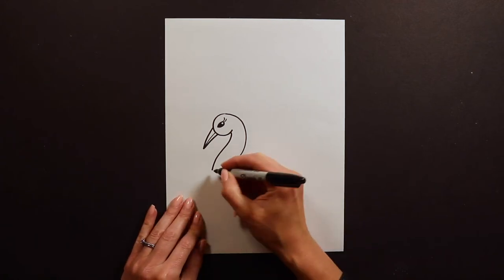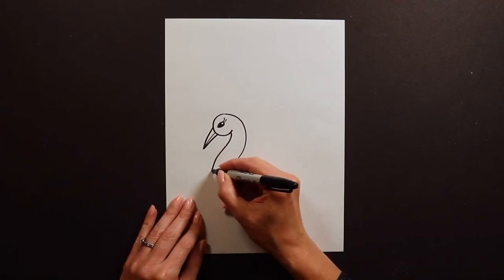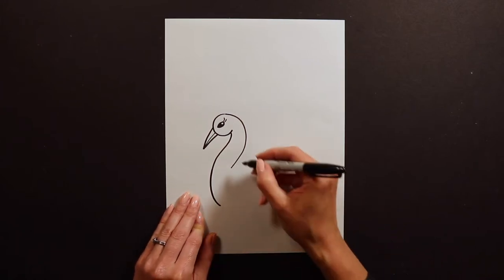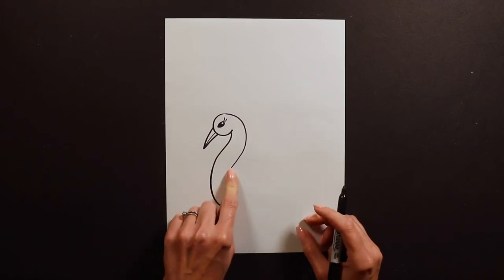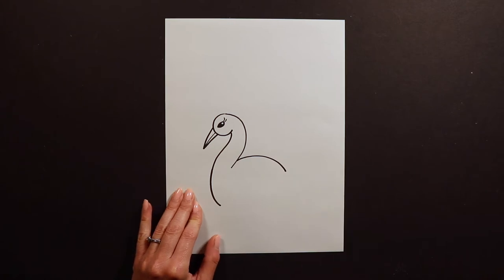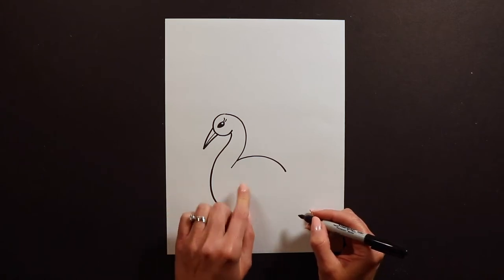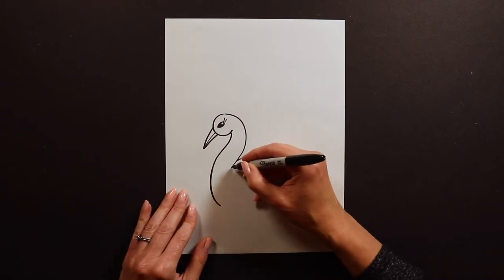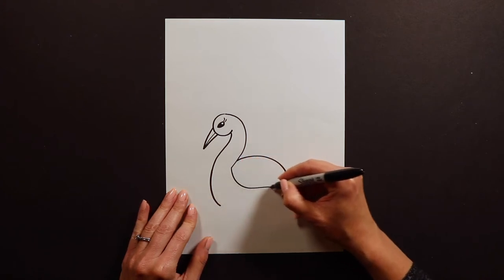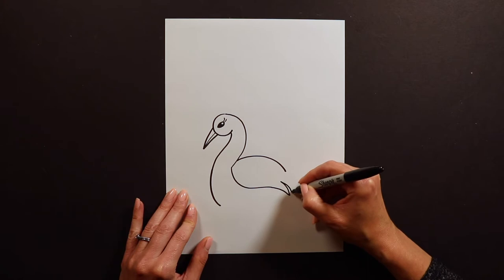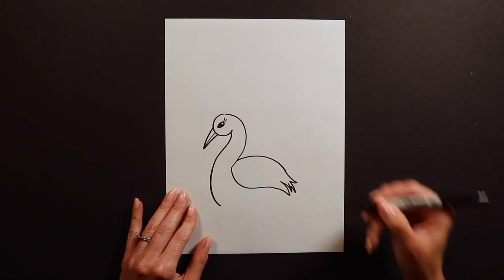To start the body I like to go and curve around like this. Then the back I start up a little bit like here and I just do a shape like this. With swans I like their feathers or their wings to be kind of ruffled. So I'll do like a curve like this, but then at the end I'm going to do some little feathers like that.